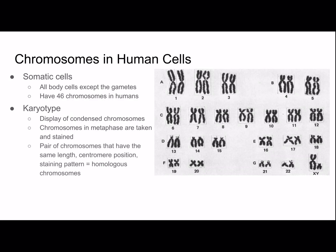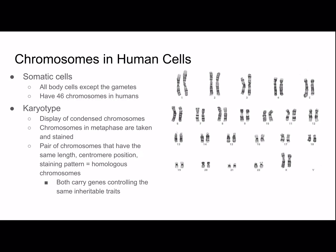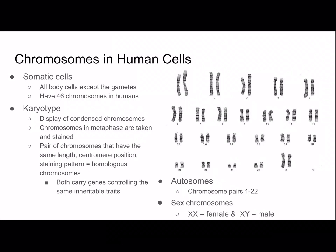A pair of chromosomes that have the same length, centromere position, and staining pattern are called homologous chromosomes. As you can see in this picture, they're grouped by homologous chromosomes and the two in each group look similar in length and centromere position. Both homologous chromosomes carry genes controlling the same inheritable traits. Autosomes are chromosome pairs 1 through 22. The other chromosomes are the sex chromosomes: XX for female and XY for male. As you can see in this karyotype, it is a female; in the previous one it was a male.